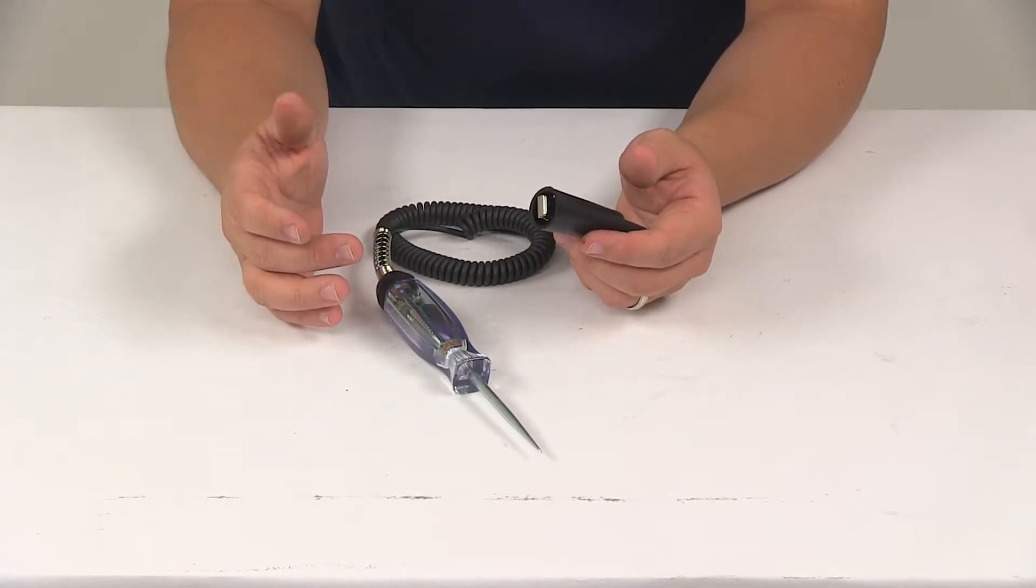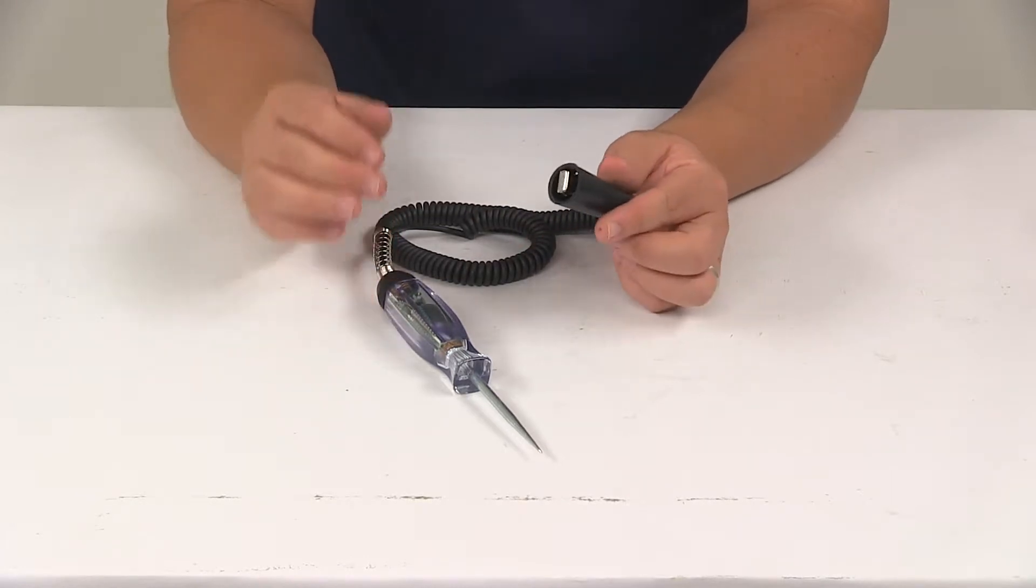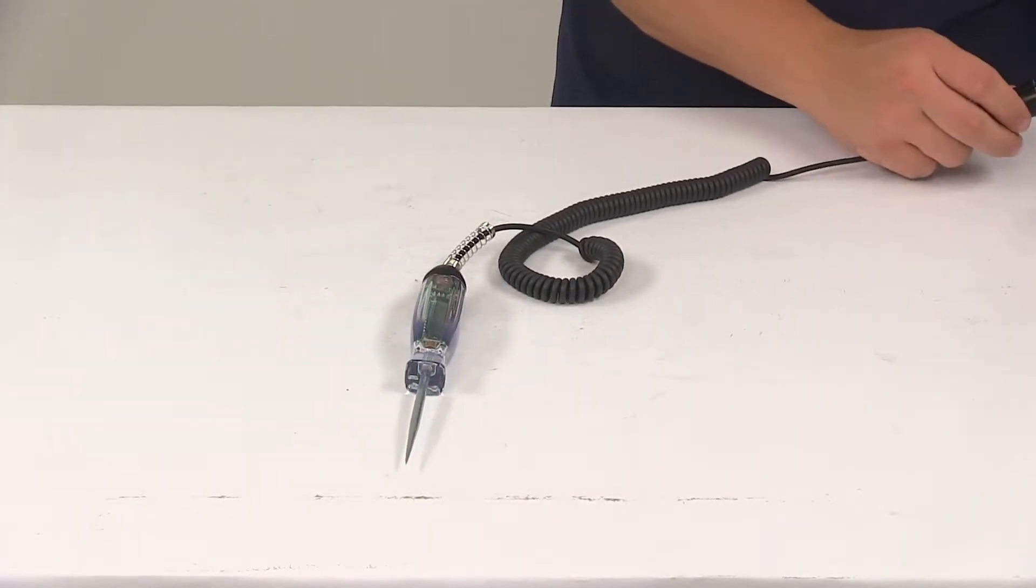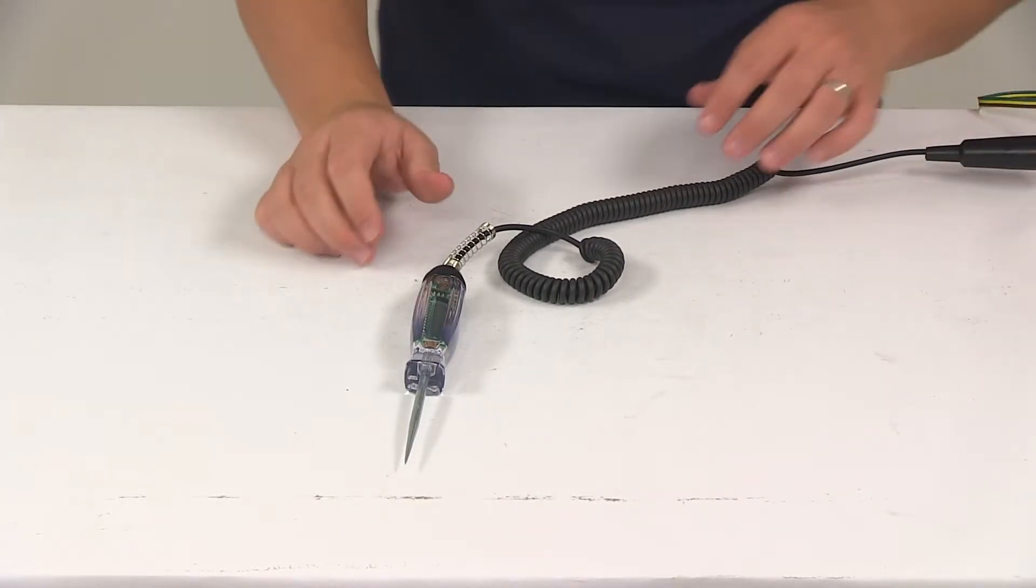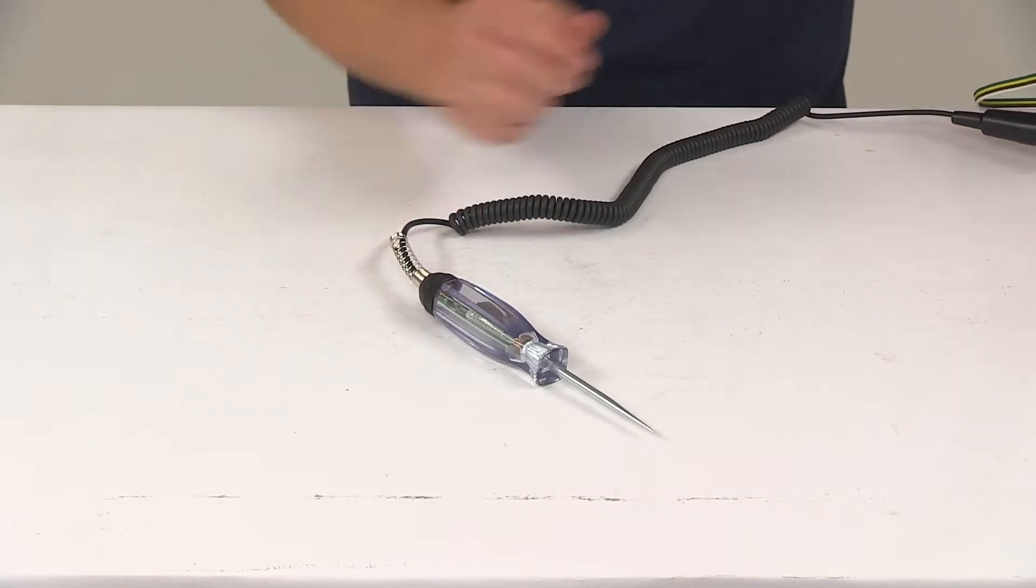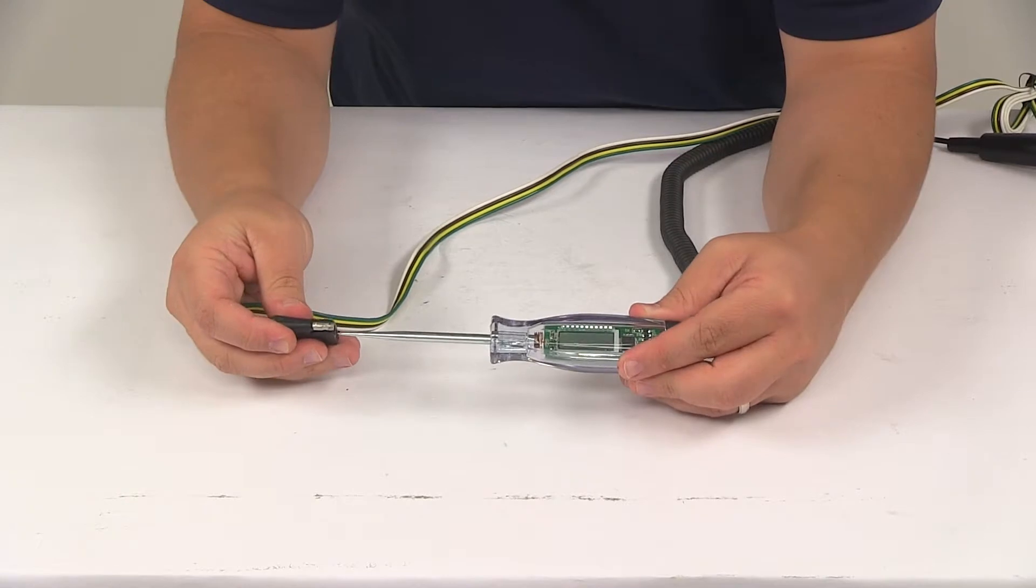So when you're ready to use it to test for circuit ground, just connect the spring clip to a good power supply. I'm actually going to do that just to show you how the unit works and how it looks. So we want to get that connected to a good power supply, and then we'll test our ground wire.